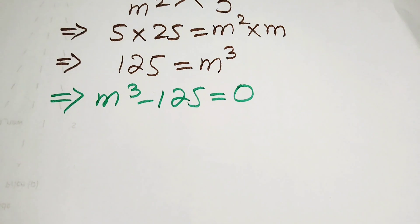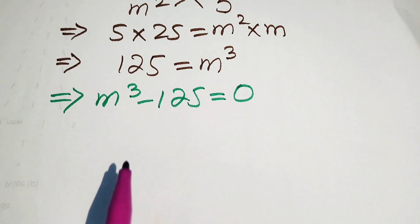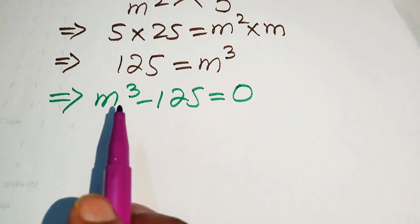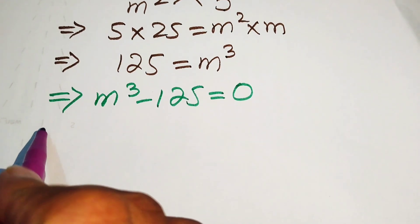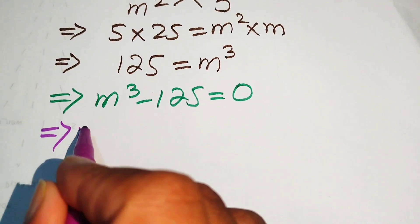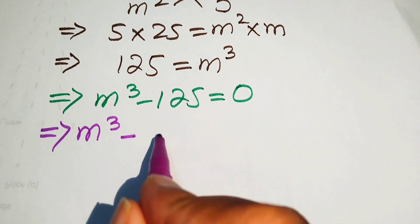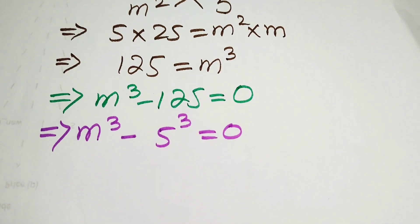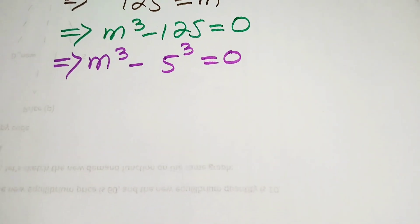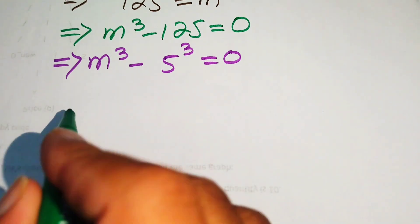This equation is a cubic equation in the variable m, so we find the three solutions. We rewrite the equation as m cubed minus 5 cubed equals 0.